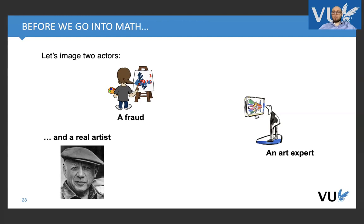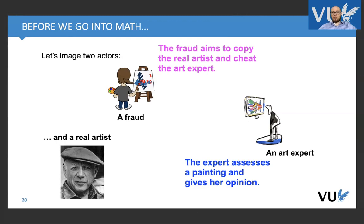We have some real artists that we have pictures from. But importantly, we have a fraud and an expert. The fraud aims to copy the real artist in such a way that the art expert will be confused. On the other hand, the expert tries to figure out whether a picture is real or not, always giving an opinion.